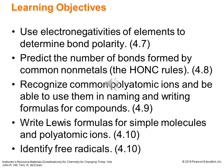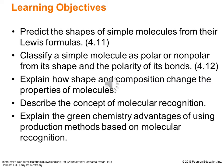Tying in with that idea of polar versus non-polar, we'll use electronegativities of elements to determine bond polarity. We'll predict the number of bonds formed by common non-metals — what we'll call the HONC rules. We'll recognize common polyatomic ions and use them in naming and writing formulas for compounds. We'll write Lewis formulas for simple molecules and simple polyatomic ions, and identify the presence of free radicals. Finally, we'll predict the shapes of simple molecules from their Lewis formulas, classify a simple molecule as polar or non-polar, explain how shape and composition change the properties of molecules, describe the concept of molecular recognition, and explain the green chemistry advantage of using production methods based on molecular recognition.